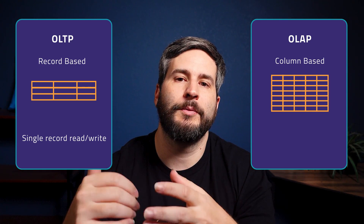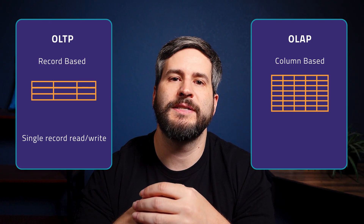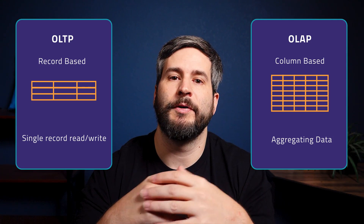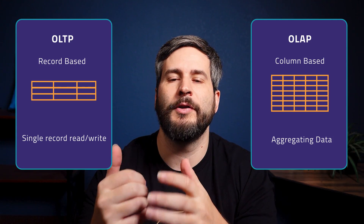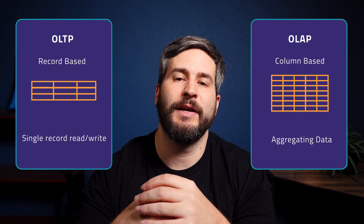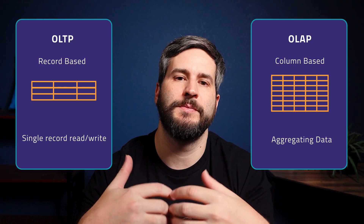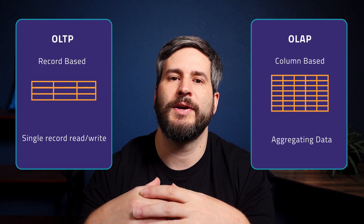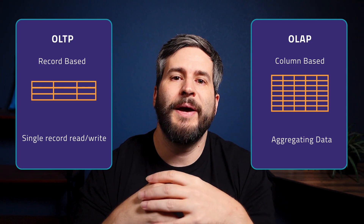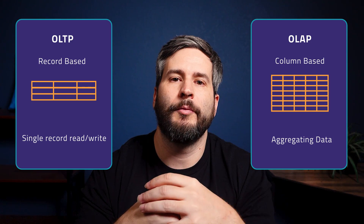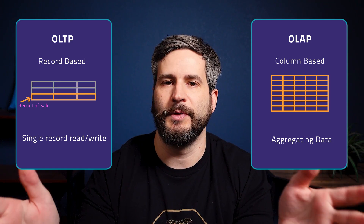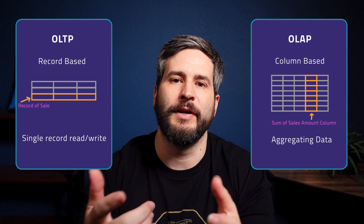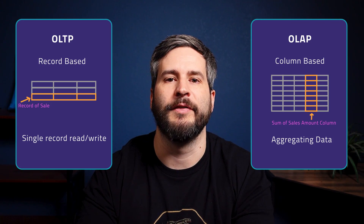Instead of prioritizing individual record processing, OLAP systems excel at tallying and aggregating data for analytical purposes. Unlike OLTP systems that cater to a large number of users, OLAP databases typically have a smaller user base — often teams of analysts or groups that utilize dashboards tailored to specific use cases. These dashboards enable them to dive deep into the data, extracting valuable insights for decision-making. In an OLTP system, you might look up a record for a sale and get all the data associated with that sale. But in an analytical system, you might want to know the total sales over a period of time, so you'd be focused on specific columns.